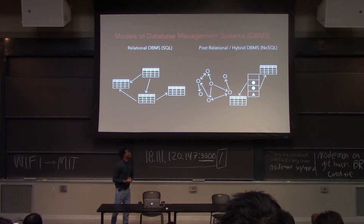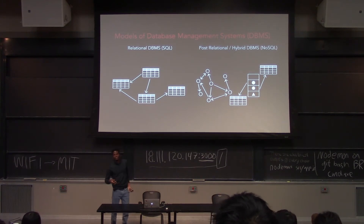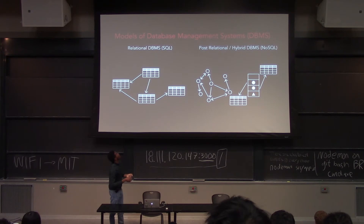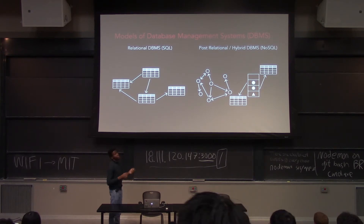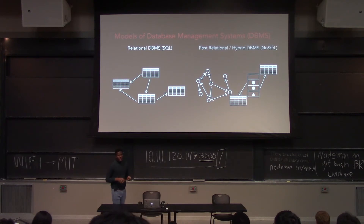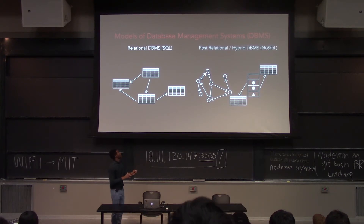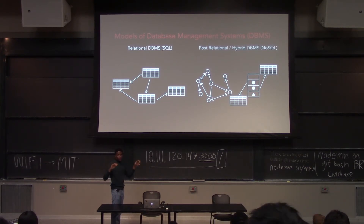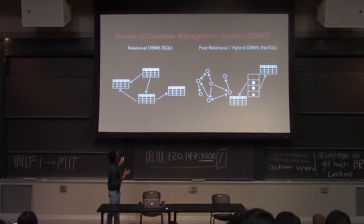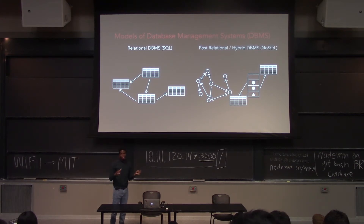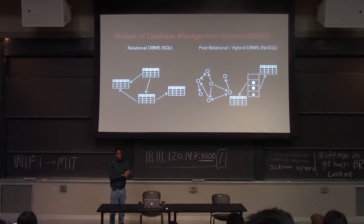We want to look at models of database management systems, and there are two models. First, we have the relational model. Think of the relational model as a bunch of Excel sheets, and the relational part is that they are connected to each other. You can have a connection from one to another — you have some ways of connecting those two different things.